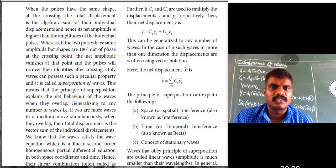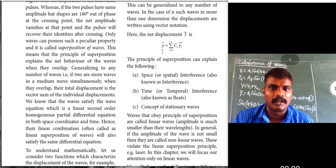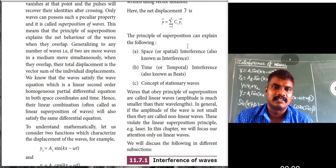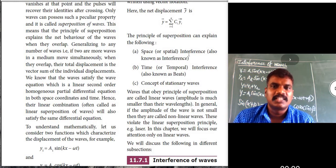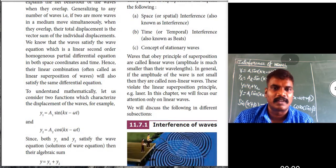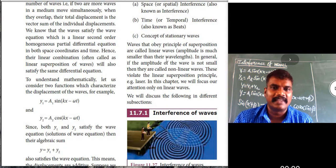This can be generalized to any number of waves. In the case of n waves in more than one dimension, the displacements are written as vectors: y⃗ = Σ cᵢ·yᵢ. There are two kinds of superposition: space interference and time interference.